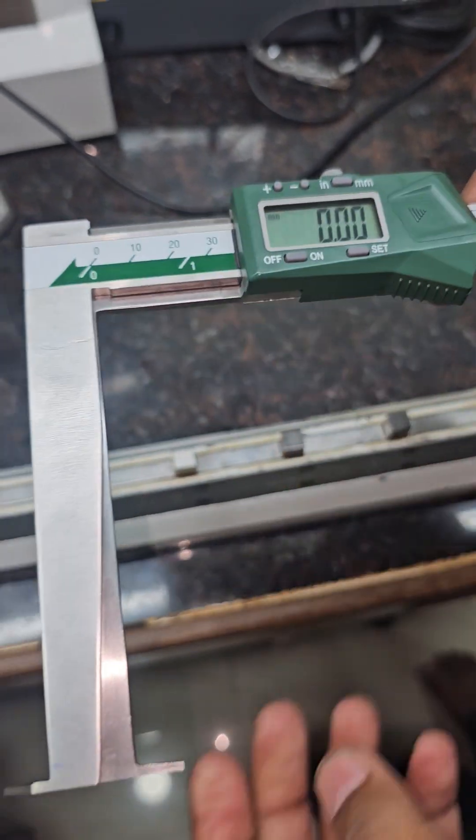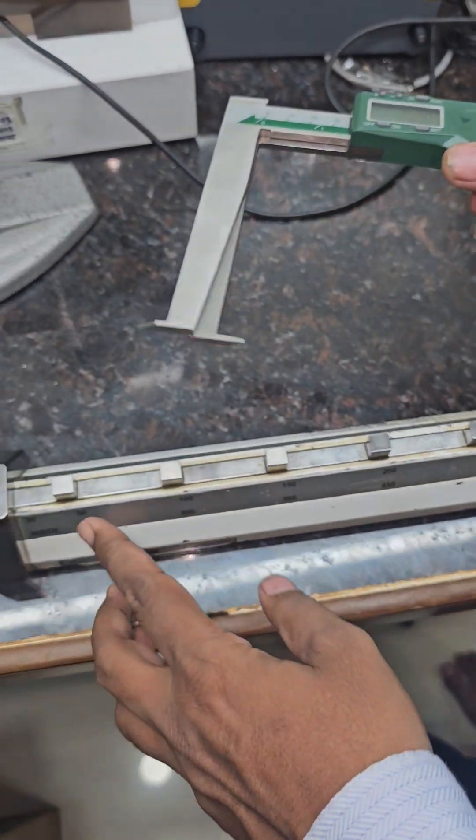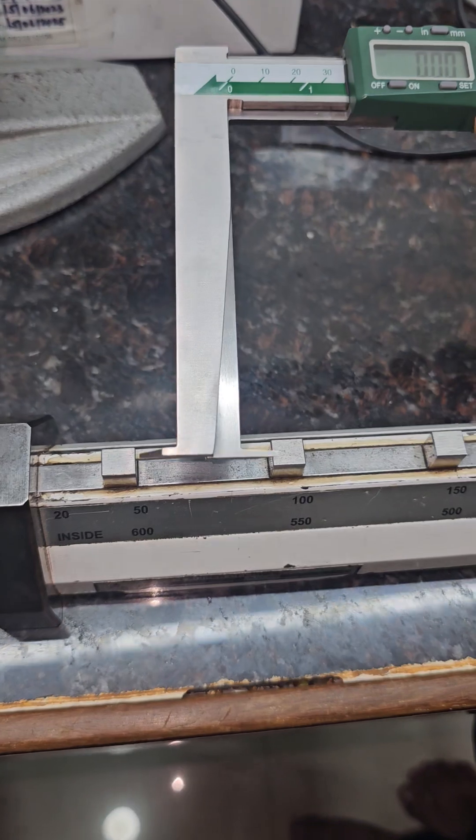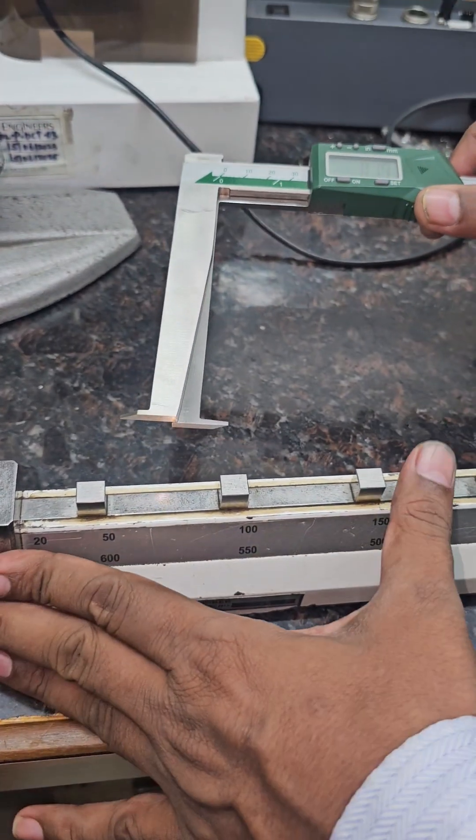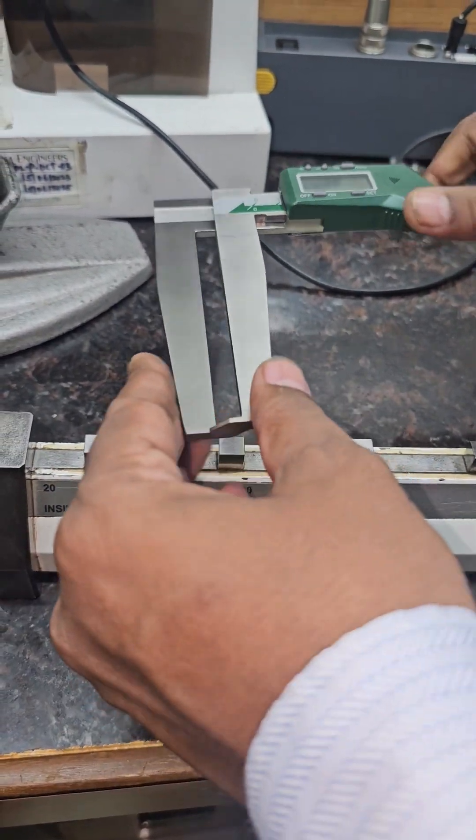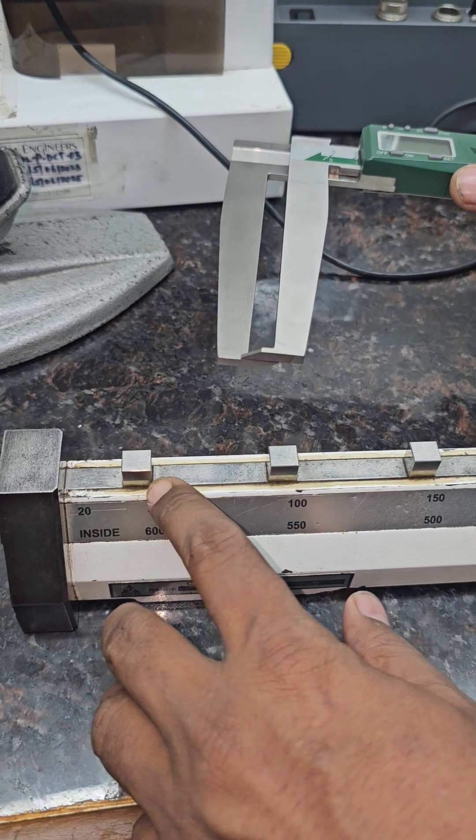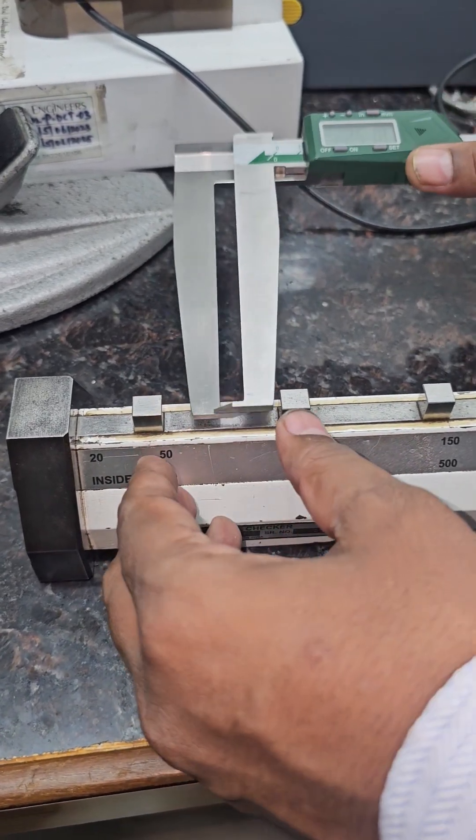This is the groove caliper. We are setting the groove caliper with the help of caliper seeker. The distance between two slips is 40mm.